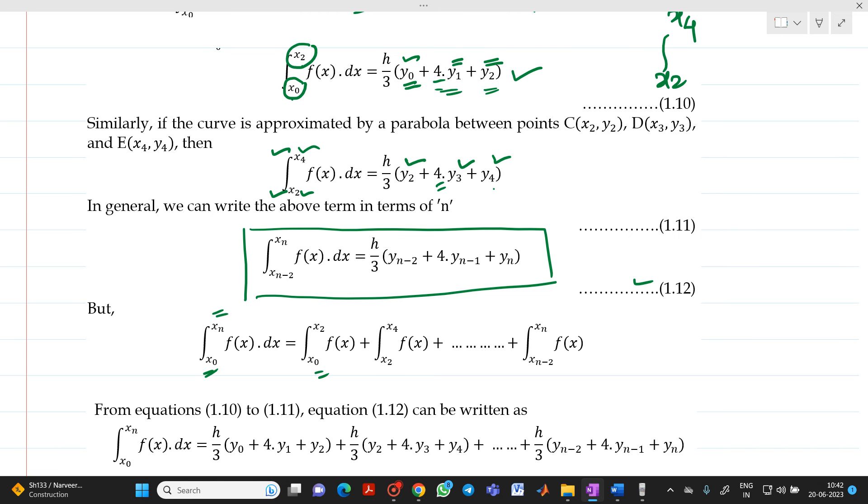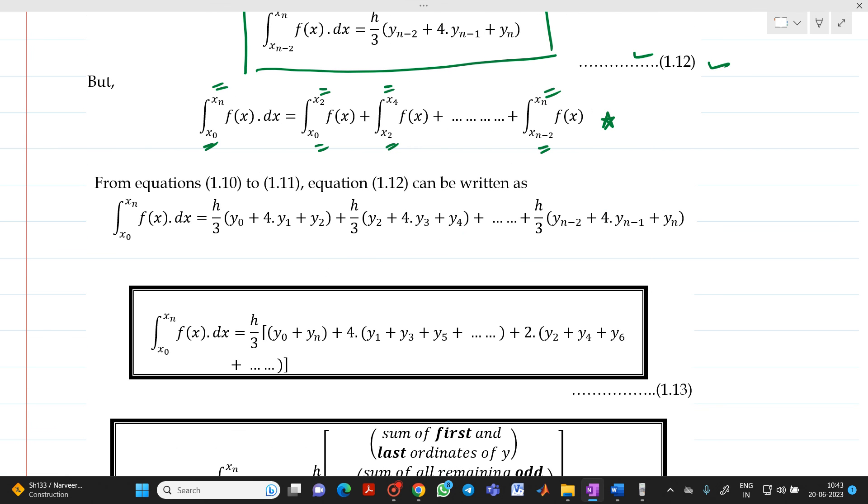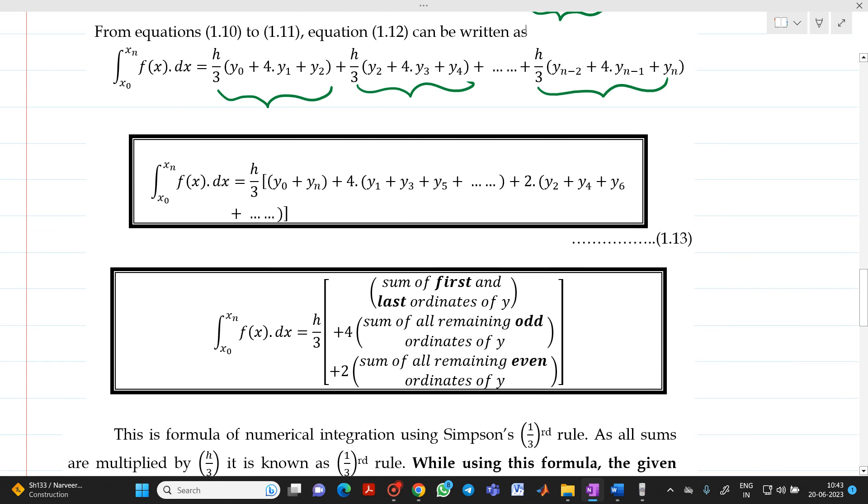But we know that what is integration x0 to xn? It will be an addition from x0 to x2 plus x2 to x4 plus x4 to x6 like that up to xn-2 to xn. So, if you substitute equation 10, equation 11, equation 12, in this equation, then you will be able to get such kind of equation. So, this will be your, this term integration x0 to x2 f(x). This will be your, this term integration x2 to x4 f(x). And this will be your, this term that is integration xn-2 to xn. So, finally, if you rewrite the formula,